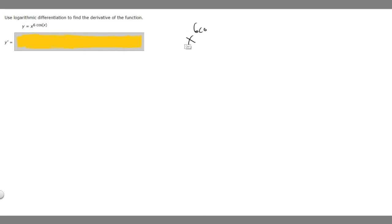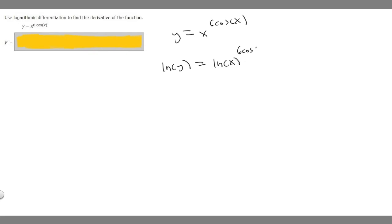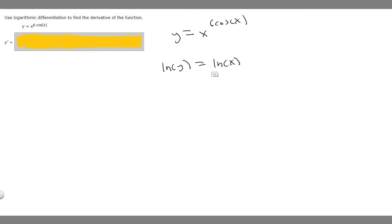Let's rewrite our function: y equals x to the 6 cosine of x. Logarithmic differentiation works by taking the natural log of both sides. So we get ln of y equals ln of x raised to the 6 cosine of x. When you have the ln of a function raised to another function, you can move the exponent out front. So we rewrite this as 6 cosine of x times the ln of x, which makes it easier to solve.